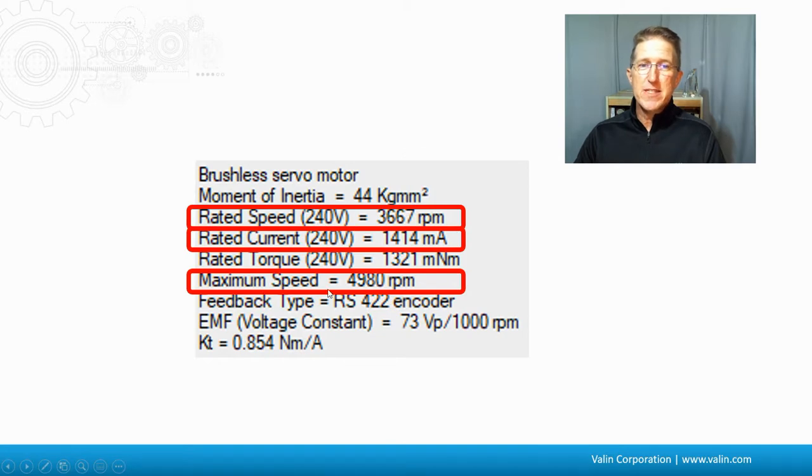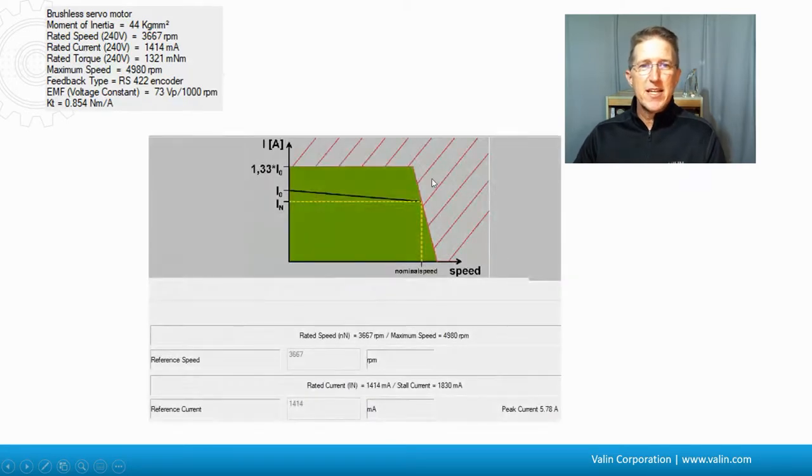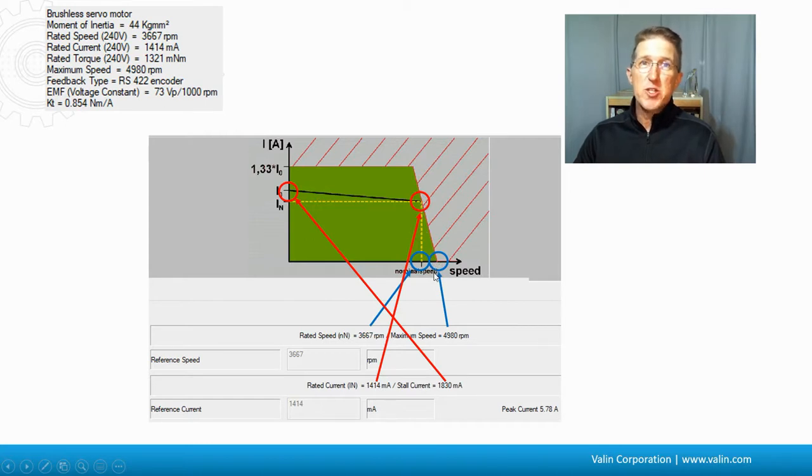Now let's take a look what this looks like in the software for this motor with this particular servo drive. Notice here that we have a rated current, which is here on the speed torque curve. But then there's also a stall current, which in this case is a little bit higher at 1.3 amps. And then there's the rated speed, which is where the knee of the curve is here. But then there is a maximum speed. So you have to know which you are talking about.